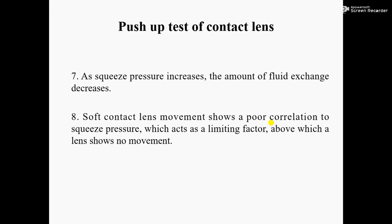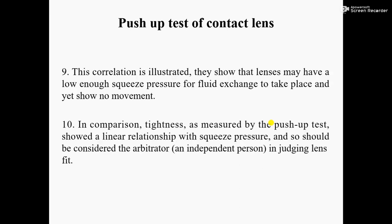Number seven: as the squeeze pressure increases, the amount of fluid exchange decreases. It means if we press harder, the pressure increases and less tear film from inside will come out. Number eight: soft contact lens movement shows a poor correlation to squeeze pressure, which acts as a limiting factor above which a lens shows no movement. In soft contact lenses, we can hardly see movement after applying pressure.